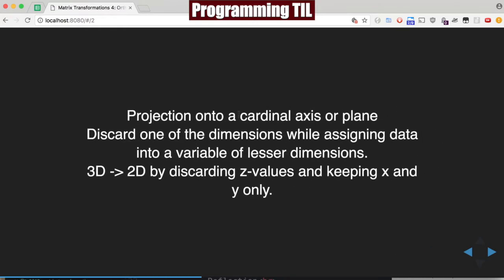So basically, I'll do it onto a cardinal axis or plane, discarding one of the dimensions and assigning the data into the variables of a lesser dimension. And so 3D to 2D is discarding the Z values and keeping X and Y only.